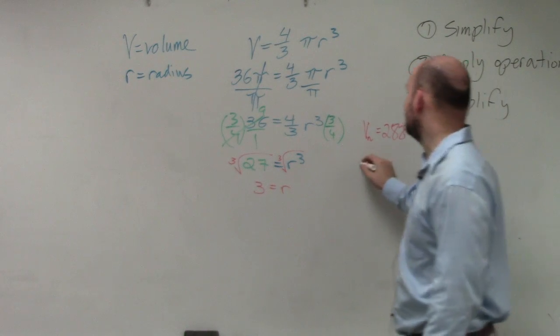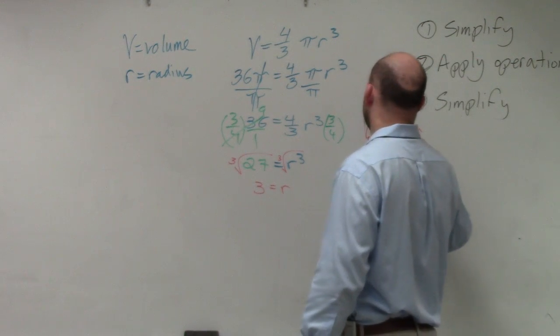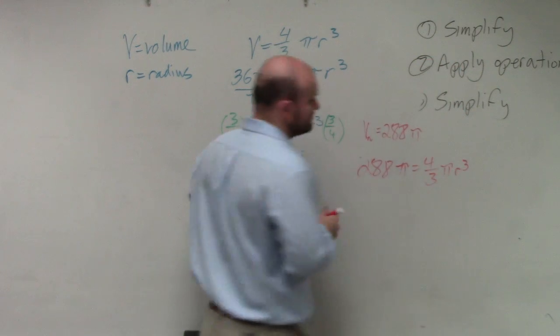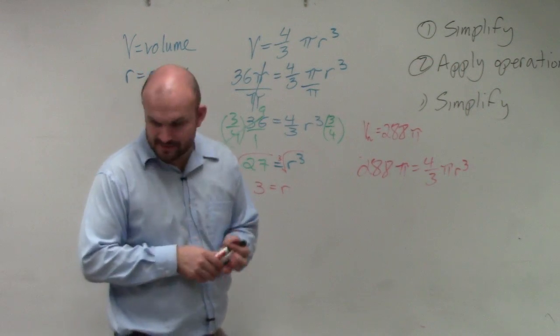So now I'm going to do the same thing. 288 pi equals 4 thirds pi r cubed. Can I go ahead and do the exact same stuff that I did before?